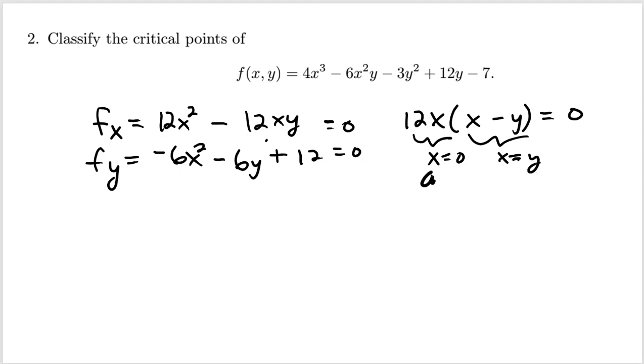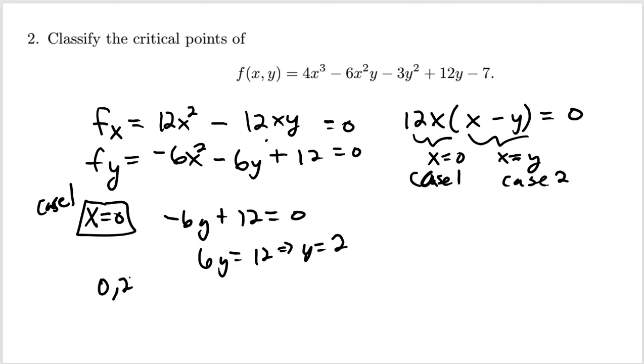Let's call this Case 1: x equals 0. Let's call this Case 2: x equals y. For Case 1, we take this information from the x partial and plug it into the y partial. They have to be equal to 0 simultaneously. If x is equal to 0, we end up with -6y + 12 = 0. That means 6y = 12, which tells you y must be 2. This gives us the critical point (0, 2).